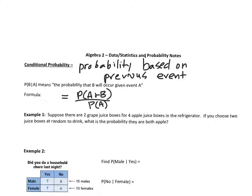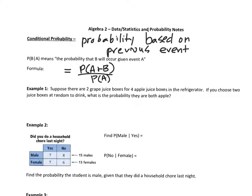I'll use this formula mostly in charts. Here's a first example of conditional probability: suppose there are two grape juice boxes and four apple juice boxes in the refrigerator. If you choose two juice boxes at random to drink, what is the probability that they're both apple?